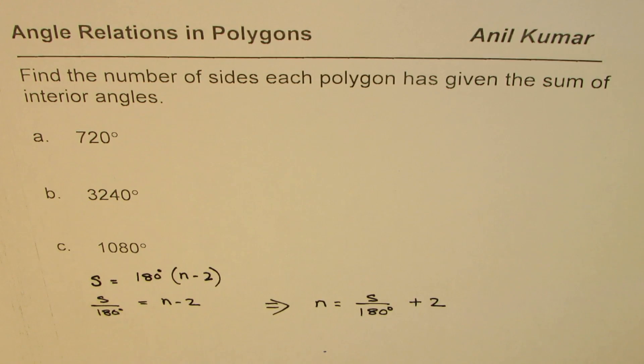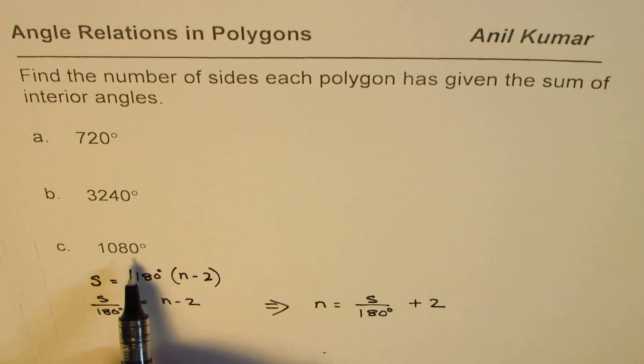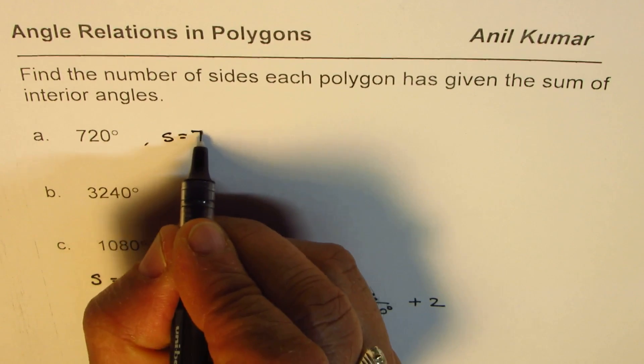I'll do two of them and the third one is for you to practice. For 720 degrees as the sum, in this case sum is given to us as 720 degrees...